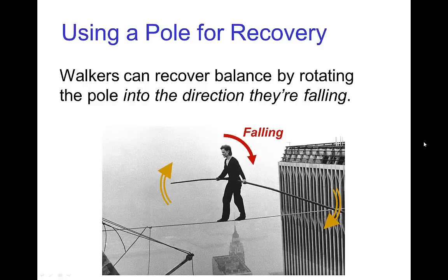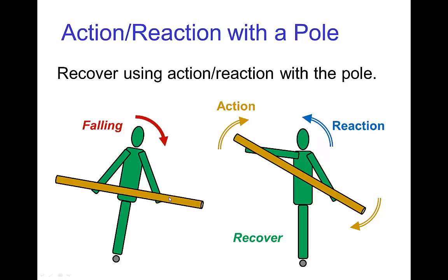But that's not the only use of the long pole. A long pole, especially when it's weighted on the ends, is useful for recovering balance. Using action-reaction, the walker can recover balance by rotating the pole into the fall. If the walker is out of balance and falling, they need something to push off against to shift their pose. They do that by pushing the pole into the fall — that's the action — and then there's a resulting reaction which rotates their body in the opposite direction.